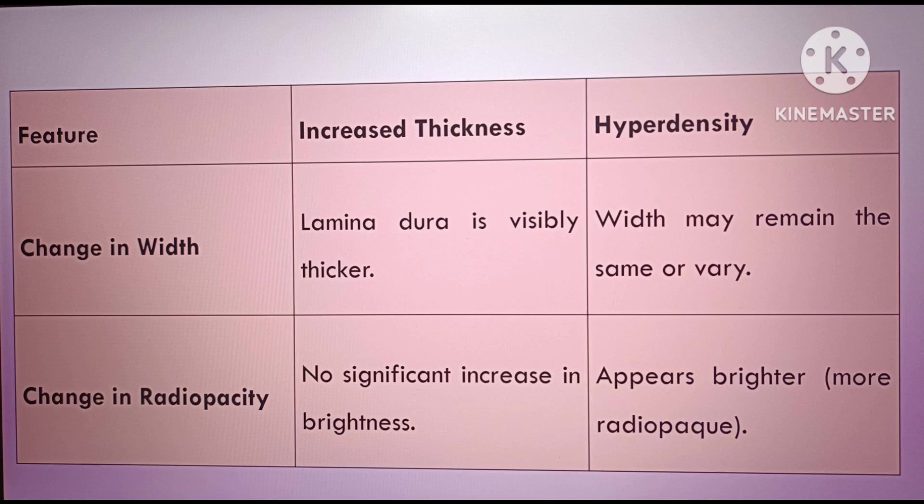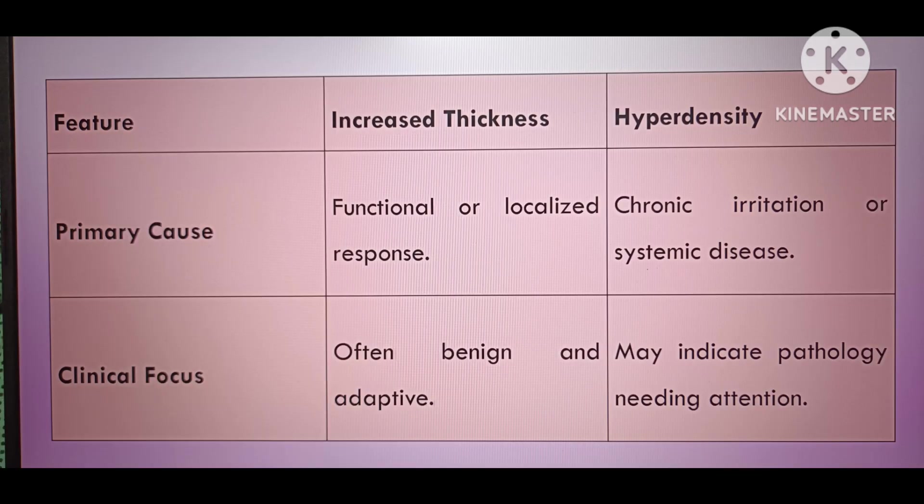Increased thickness often results from adaptive responses like occlusal stress, while hyperdensity is typically due to chronic irritation or systemic conditions. Thickened lamina dura shows a uniform continuous outline, whereas hyperdensity may appear patchy or irregular. Hyperdensity is more commonly associated with systemic disorders or chronic inflammation. Clinically, increased thickness is often benign, while hyperdensity may signal underlying disease — for example, thickening occurs in sclerotic osteitis and hyperdensity appears in Paget's disease or osteopetrosis.